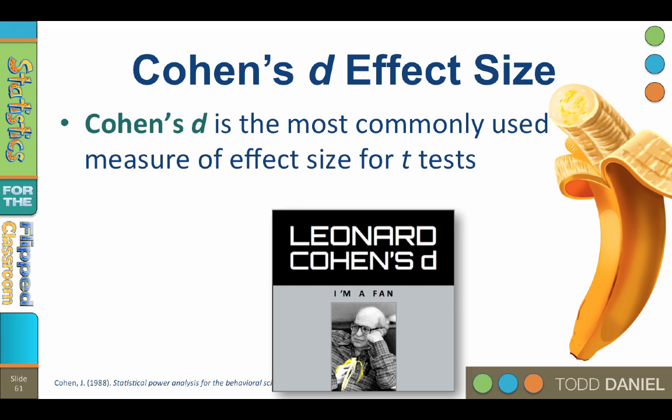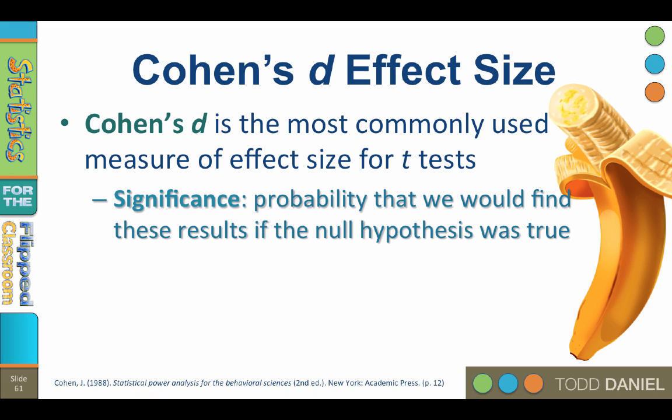So how is effect size different than significance? Statistical significance tells us that differences between means were not due to chance, or at least probably not due to chance. It measures the probability that we would find the results that we found if the null hypothesis was true, which we know it never truly is. And making decisions based on p-values can be very misleading. Consider the following example from Rosnow and Rosenthal.